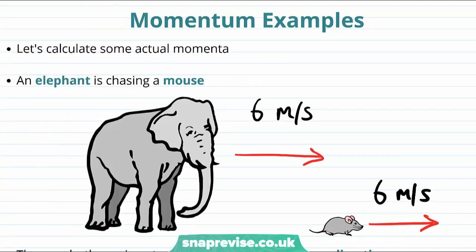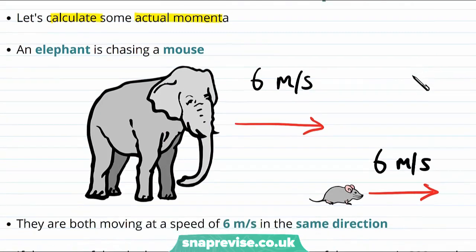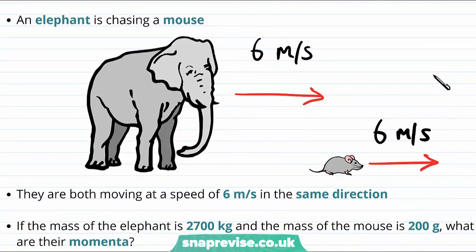Okay, now let's calculate some momenta. And remember that the momentum increases when either the mass is larger or the velocity is larger. Imagine an elephant is chasing a mouse.